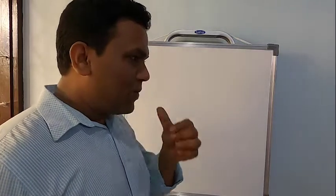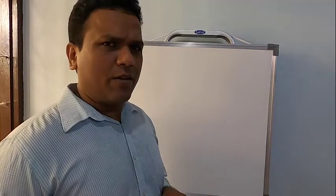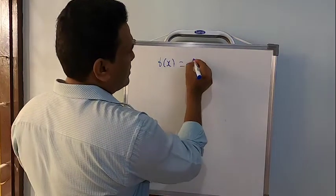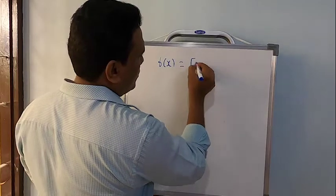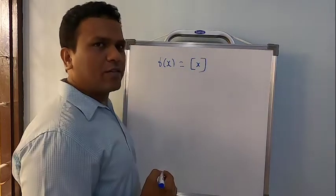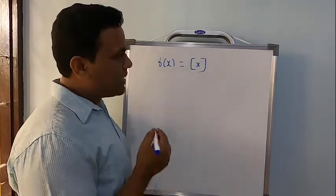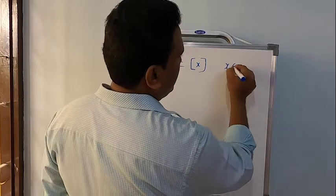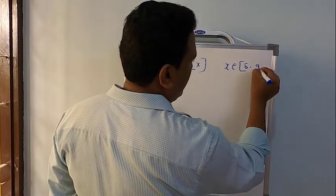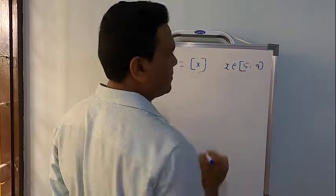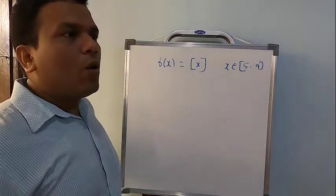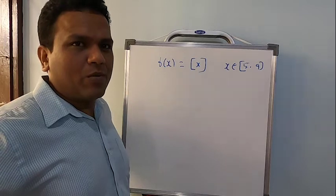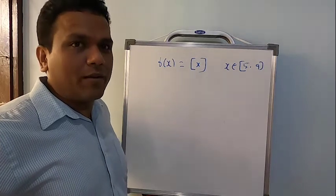A polynomial function will usually be given to us. But what have they given us here? f(x) = greatest integer of x, and they said x belongs to the closed interval [5, 9]. Okay, so it is not a polynomial this time. So I want to check whether it is going to be continuous.